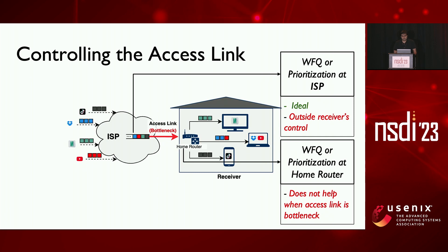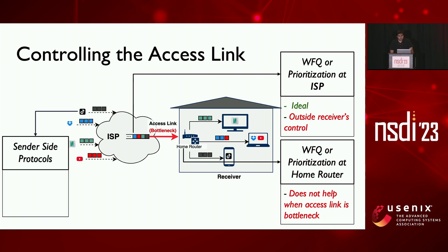And even if such a mechanism were in place, ISPs do not have enough visibility into traffic to appropriately classify it. Another option is to use scavenger protocols like LEDBAT for low priority flows that yield bandwidth more readily to high priority flows. Again, choosing such protocols is solely up to the sender, who may not even know how the receiver would want to prioritize their flows.